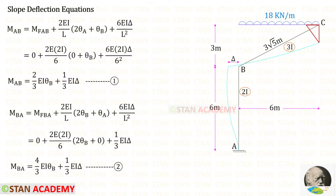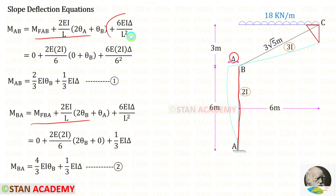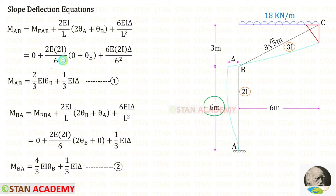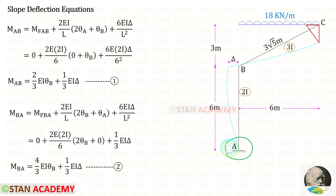Now let us write the slope deflection equations for member AB. Since this member is subjected to sway towards the left, the sway moments should be taken as positive. The length of AB is 6 and the moment of inertia is 2i. Since point A has a fixed support, theta_A equals 0. This gives us two equations for member AB.